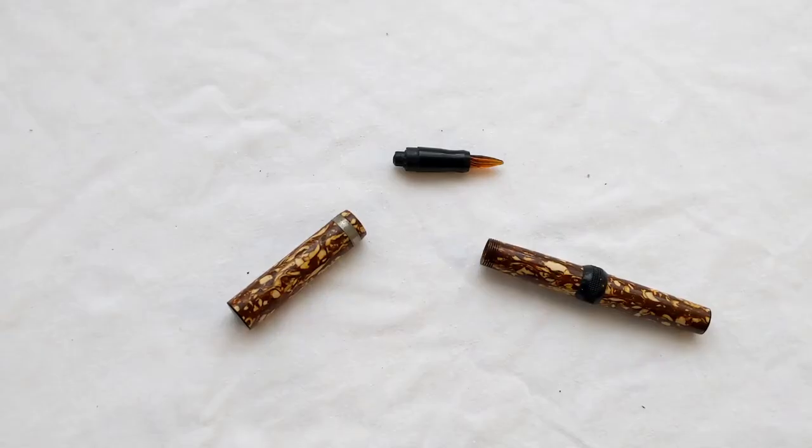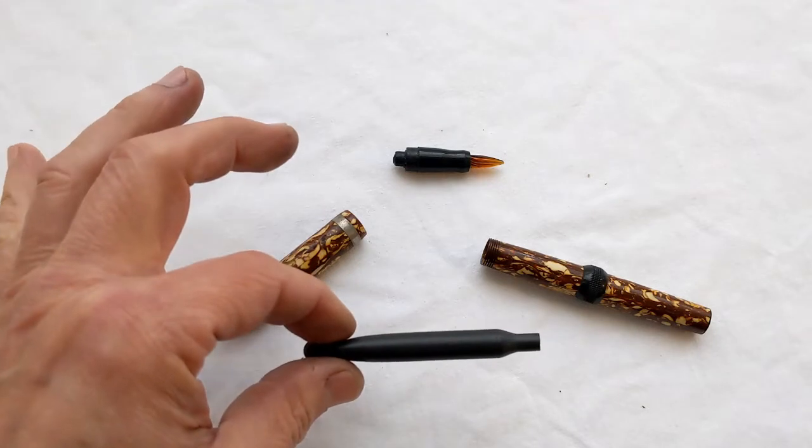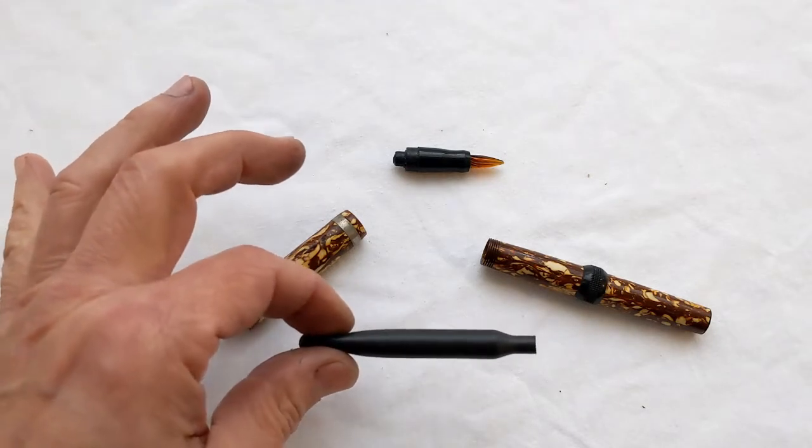Now, in our previous example, we had the Waterman 52.5V, and that's an example where the sac size, the sac actually fits very tightly on the nipple. And as a result, the correct sac size is smaller than you would think. Now, sometimes the sac size goes the other way around. And that's typically the case when the pen originally had a necked sac.